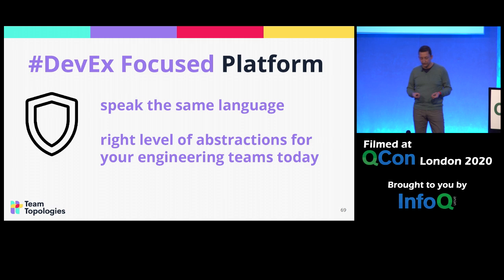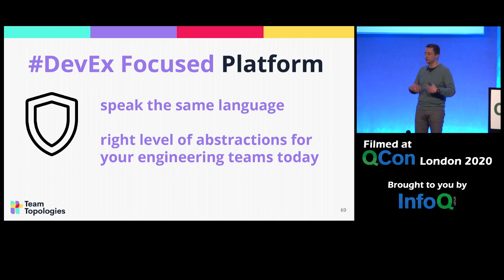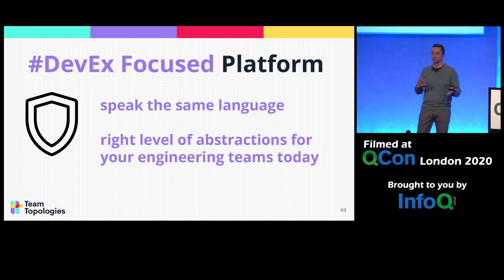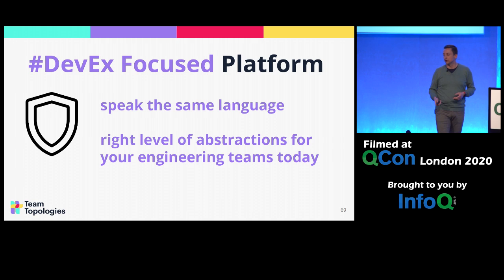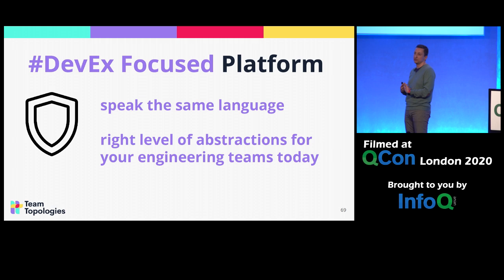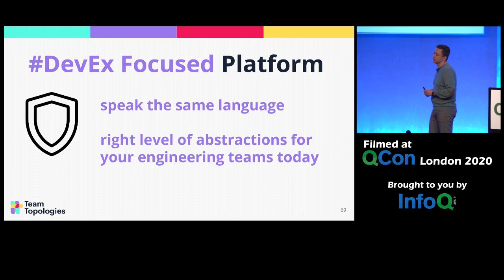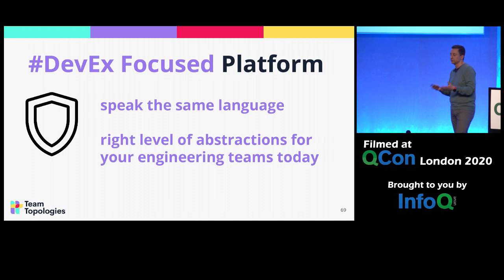Focusing on the developer experience — the usability of the platform — it should speak the same language as our development teams and provide services in a way that is straightforward for them. Sometimes you might need to make tradeoffs: if development teams are not familiar with YAML, you might decide the cost is low enough and it helps in the long term, so go ahead. But it's not always a straightforward decision and shouldn't be made without considering the impact on consuming teams. We should provide the right levels of abstraction for our teams today — contextual and evolving over time, always looking at what makes sense given the maturity of our teams' engineering practices.